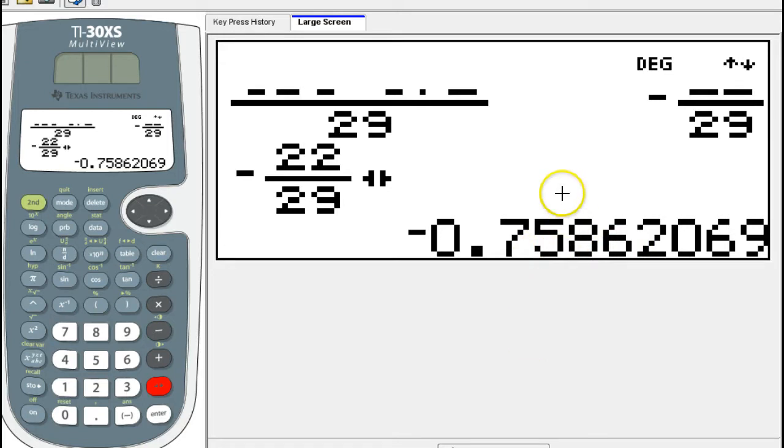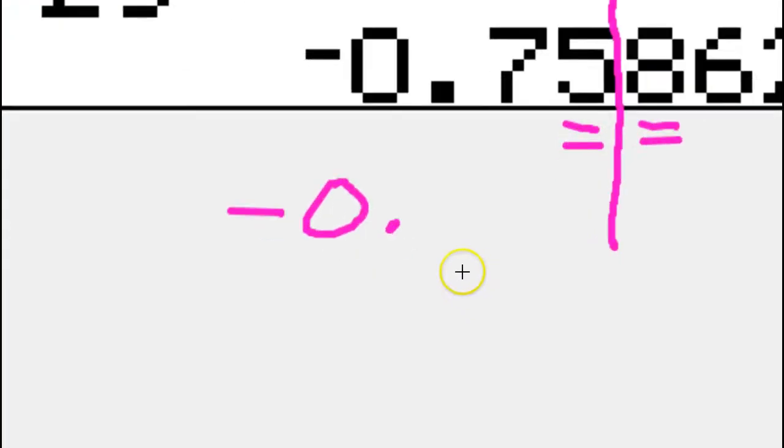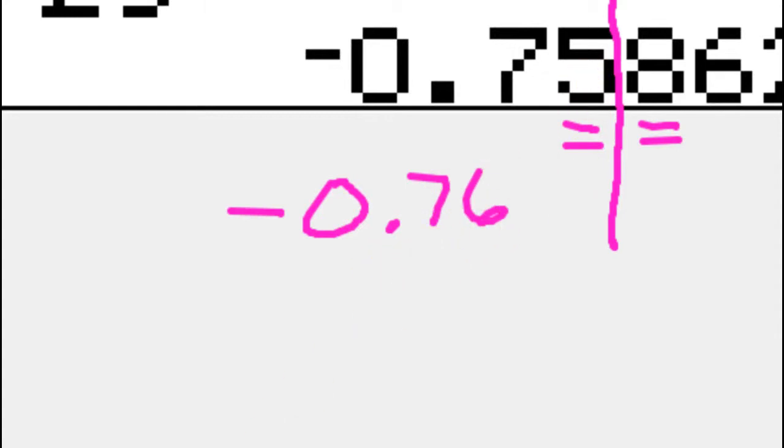Now for z-scores, we're always going to use two decimal places. So we're going to have to kind of cut it here. Rounding is going to be very important. Because this next number is 5 or greater, that means this number is going to have to be rounded up. So our final answer should be negative 0.76. We have our z-score of negative 0.76.